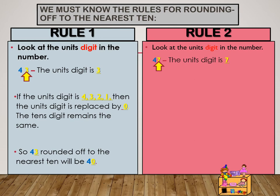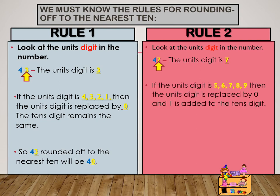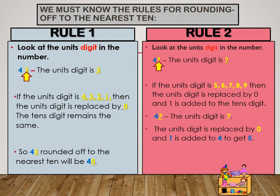If the unit's digit is 5, 6, 7, 8, or 9, then the unit's digit is replaced by 0 and 1 is added to the 4 to get 5. So 47 rounded off to the nearest 10 is 50.